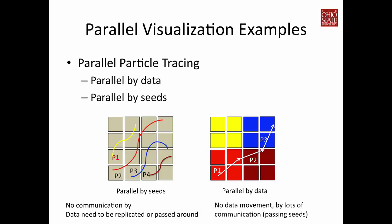The other strategy is parallel-by-seeds: you do not divide the data, and instead assume every processor can access the entire dataset. With four particles, you assign one particle per processor, and each processor traces its particle to completion. However, each processor either preloads the entire dataset — which requires data replication and limits scalable data size — or loads data from disk on the fly, requiring a lot of I/O. Parallel-by-seeds gives good performance only when there are enough particles to keep every processor busy and the data is small enough to preload into each processor's local memory.